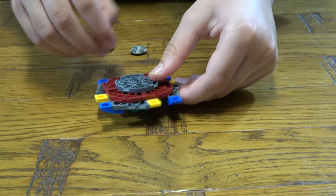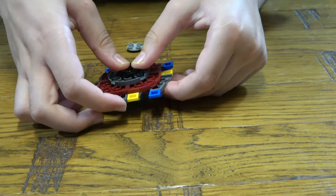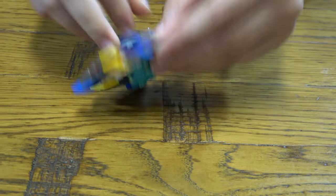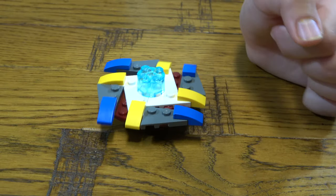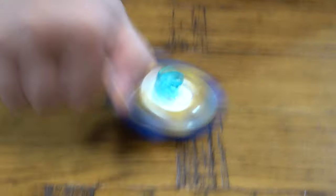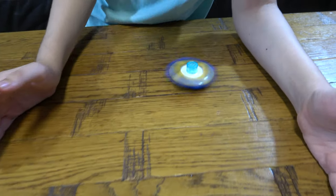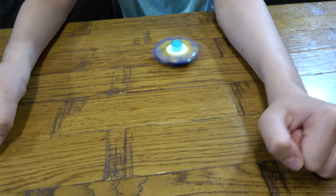The cool thing about this Beyblade, the blue slopes make it look like it has a blue force field when you spin it. Just look. Oh, it's a bit fast. Look, when you spin it, it looks like it has a blue force field around it.